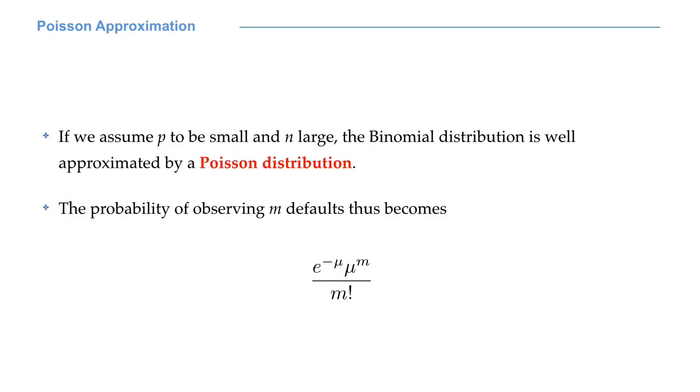A further step in the credit risk plus model is to assume P, the probability of default of each counterparty, to be small, while the total number of counterparties, that is N, is large. This means that we have a large portfolio of loans. Given these assumptions, the binomial distribution is well approximated by a Poisson distribution. The probability of observing M defaults is now e to the power of minus mu times mu to the power of M, over M factorial.